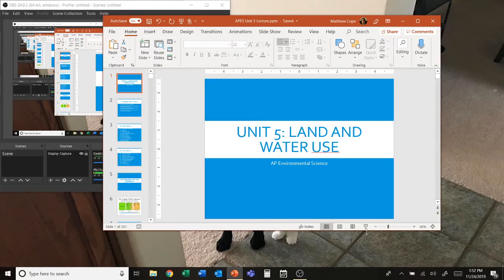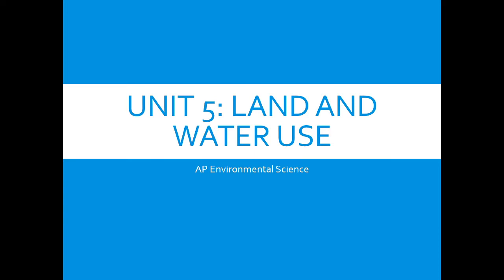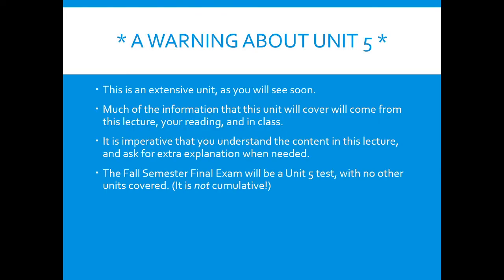Welcome to video one for unit five for AP Environmental Science. Unit five is land and water use. This is an extensive unit — a lot of the information will come from this lecture, the reading from the book, and some of the stuff we do in class. You need to make sure you get all three of those to help you with the unit final.